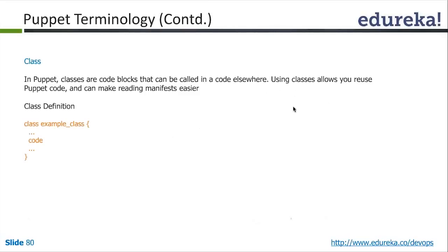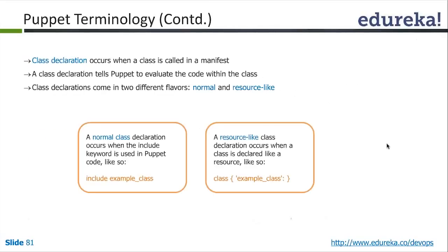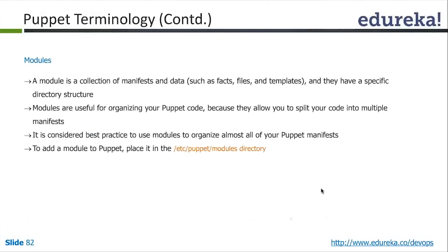A class declaration occurs when a class is called in a manifest, telling Puppet to evaluate the code within the class. It comes in two flavors: a normal declaration using the 'include' keyword, and a resource-like declaration when a class is declared like a resource. A module is a collection of manifests and data with a specific directory structure. Modules are useful for organizing your Puppet code by splitting it into multiple manifests.